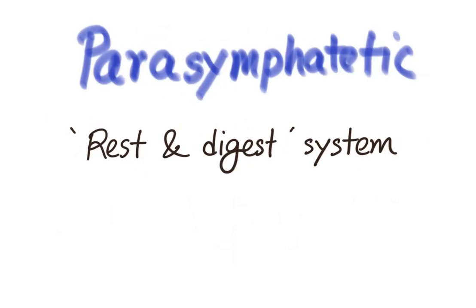The parasympathetic nervous system is also called the rest-and-digest system. Here the pupils constrict, the heart rate slows down, the airways narrow, and functions of vegetative systems like the gut and bladder increase.